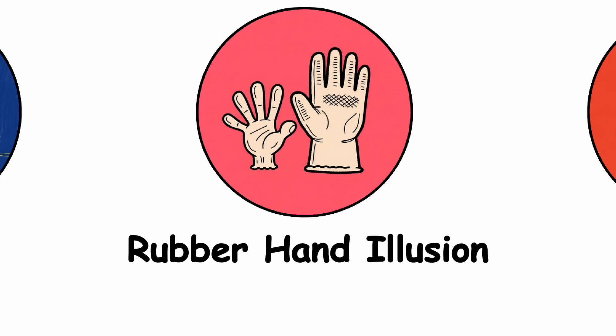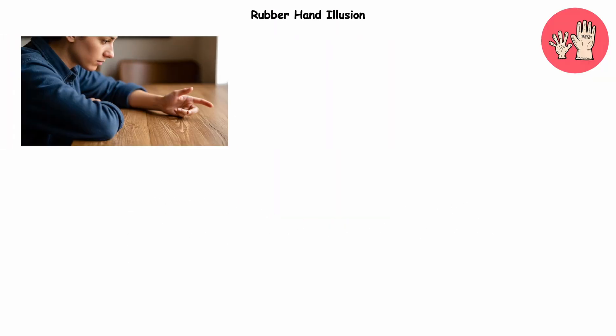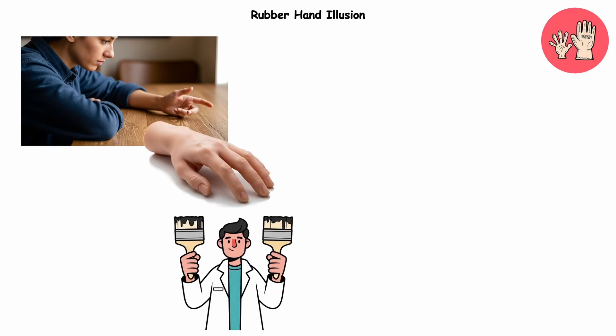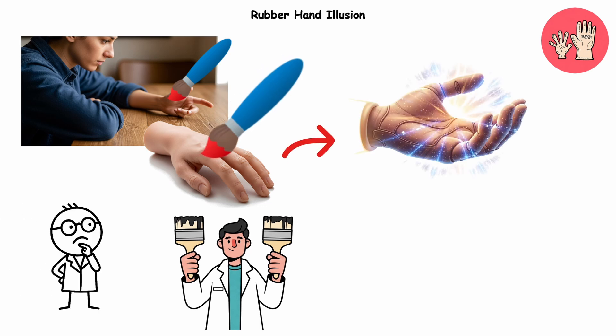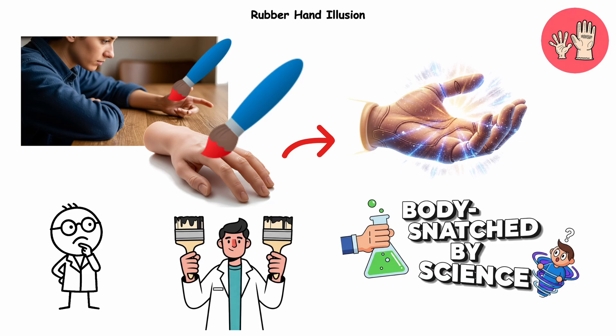Rubber hand illusion. Imagine sitting at a table. Your real hand is hidden out of sight. In front of you is a very convincing rubber hand. A researcher starts brushing both at the same time, yours and the fake one. And suddenly, you feel like the rubber hand is yours. Congrats, you've been body snatched by science.